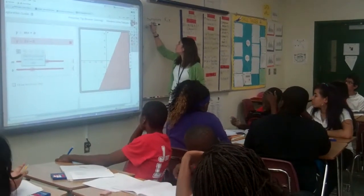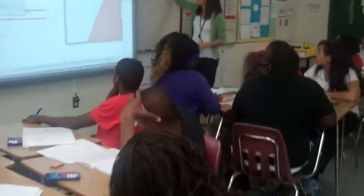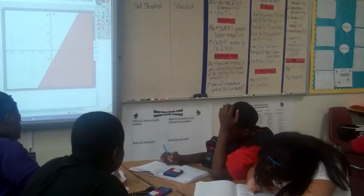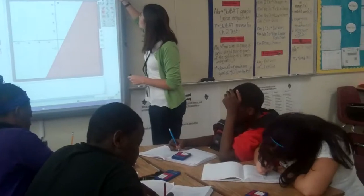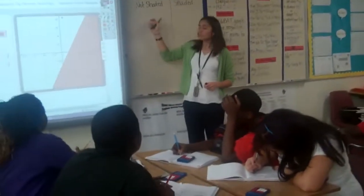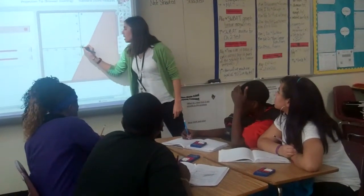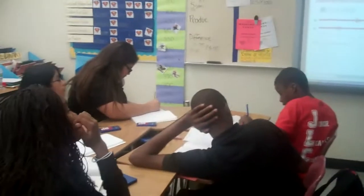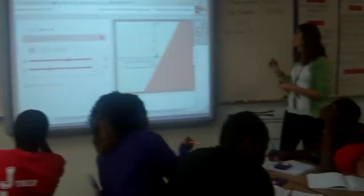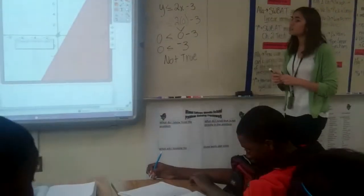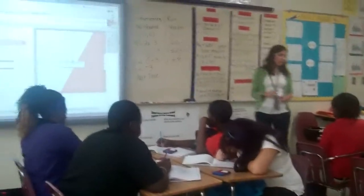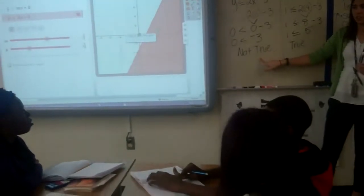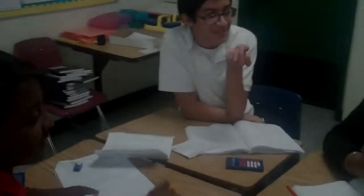This is what I'm going to do — I'm going to pick a point from the not-shaded side and a point from the shaded side. Go ahead and write this. The easiest point on the not-shaded side is the origin, zero comma zero. I'm going to take my equation. Eight minus three is negative five. So that's a point that's not in the shaded side.